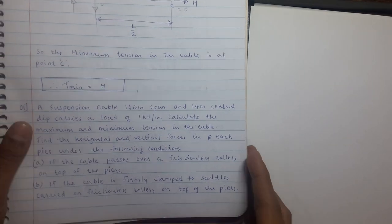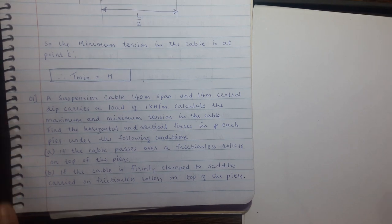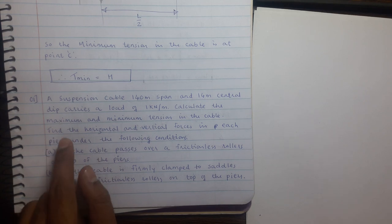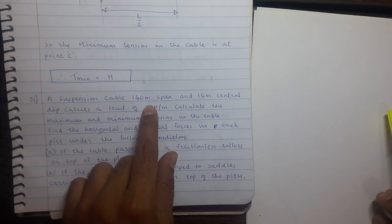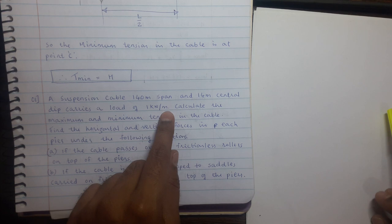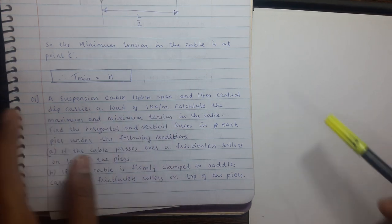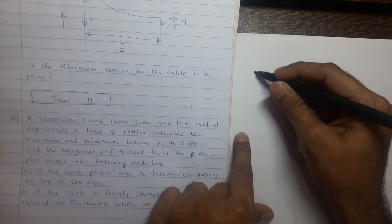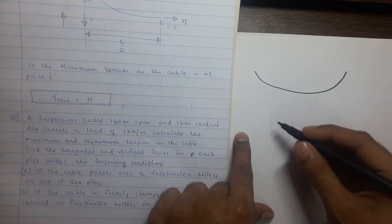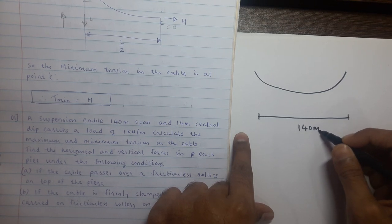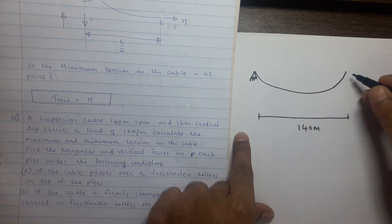Hello everyone. Today we shall solve one problem on suspension bridges. A suspension cable has a 140-meter span and the span of the suspension cable is given with hinge support at both ends.